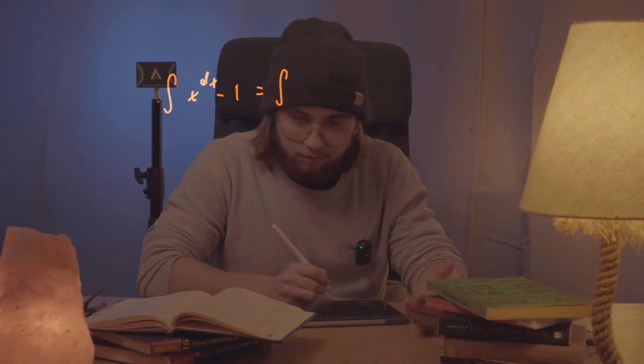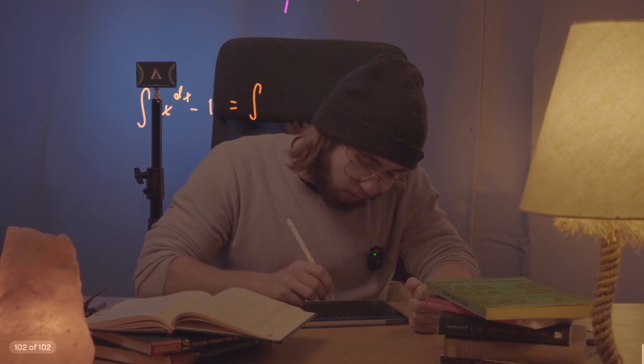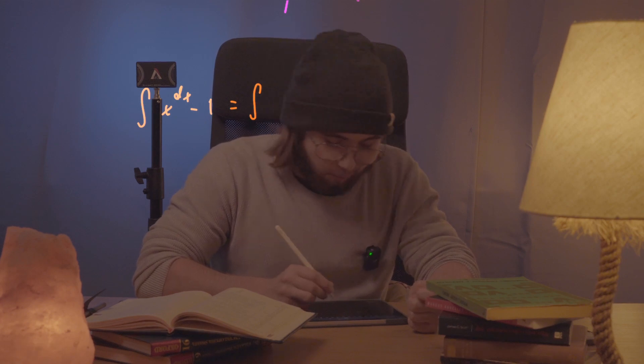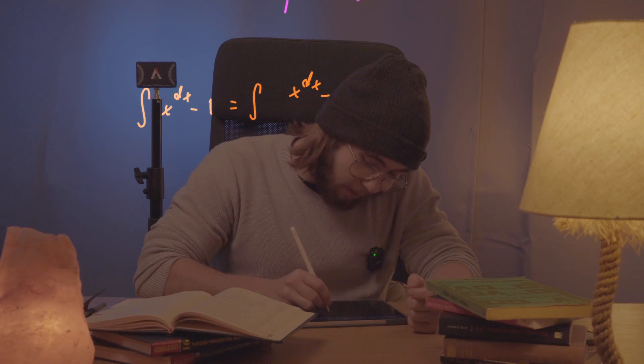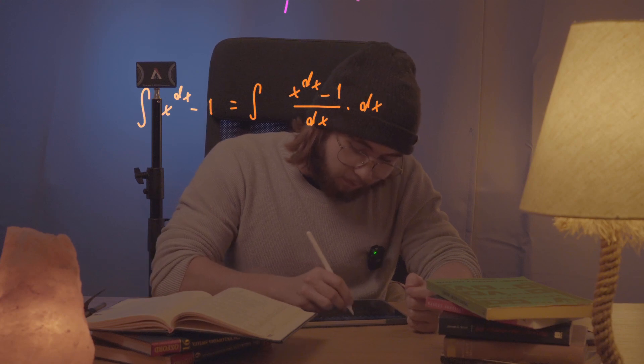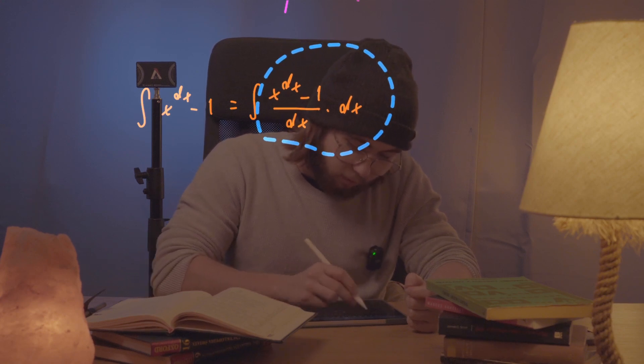So we can even go and proceed further. Yeah, so what I would like to do is divide and then multiply this entire thing by a dx. So what I would like to do is get the integral of x to the power of dx minus one all over dx and then everything multiplied by that dx. So that's the integral I would like to evaluate.